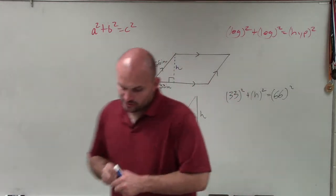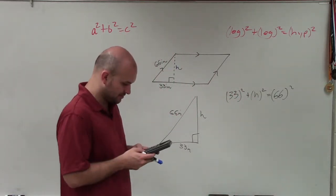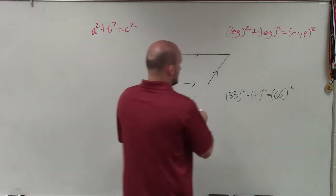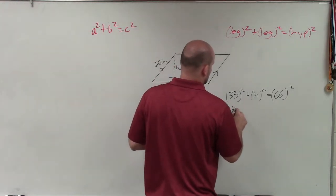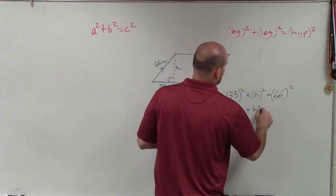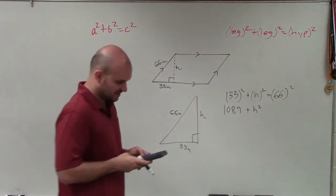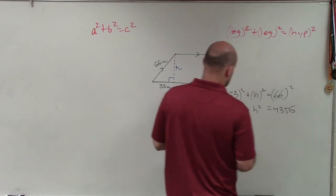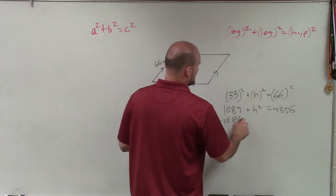So to go ahead and do this, I will use my lovely handy-dandy calculator, and I'll do 33 squared is 1,089 plus h squared. And then I do 66 squared is 4,356. I subtract 1,089,